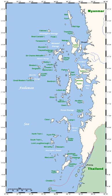Continental fragments correspond to land masses that have separated from a continental mass due to tectonic displacement. The Farallon Islands off the coast of California are an example.